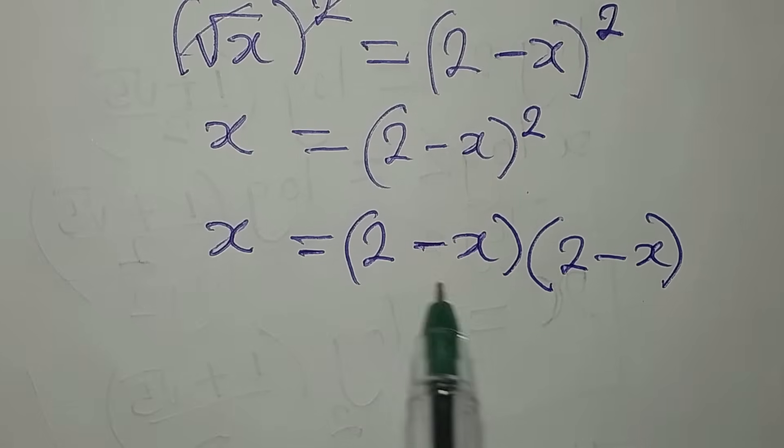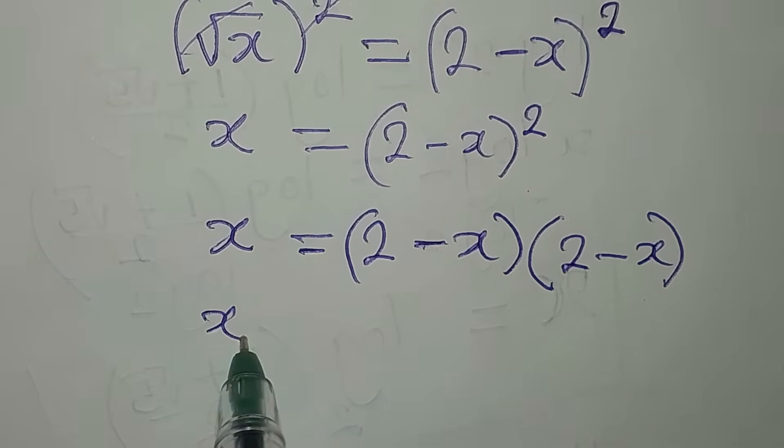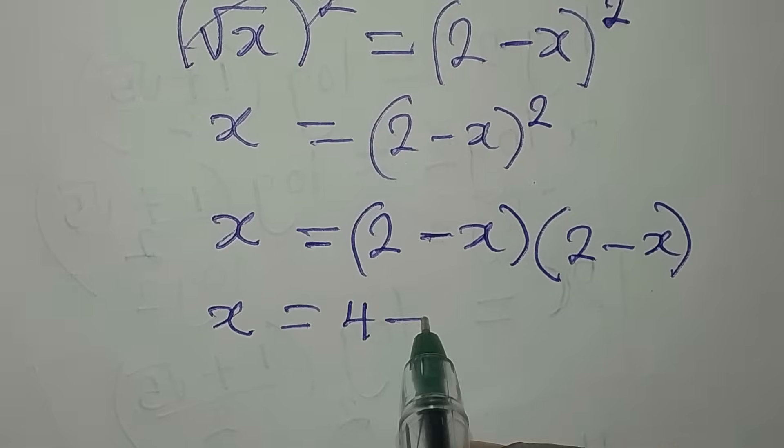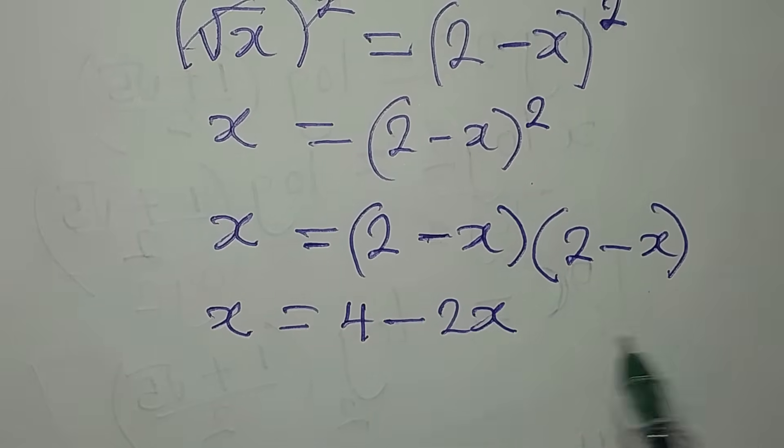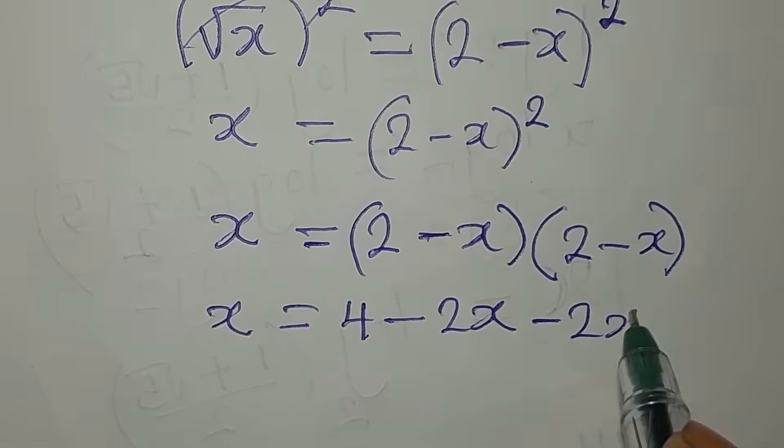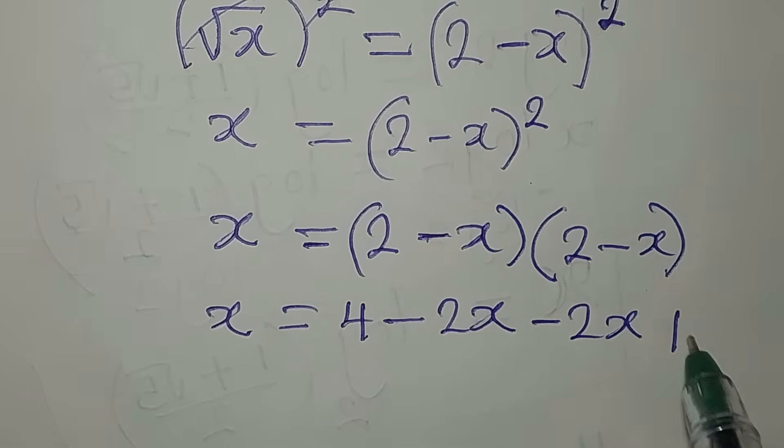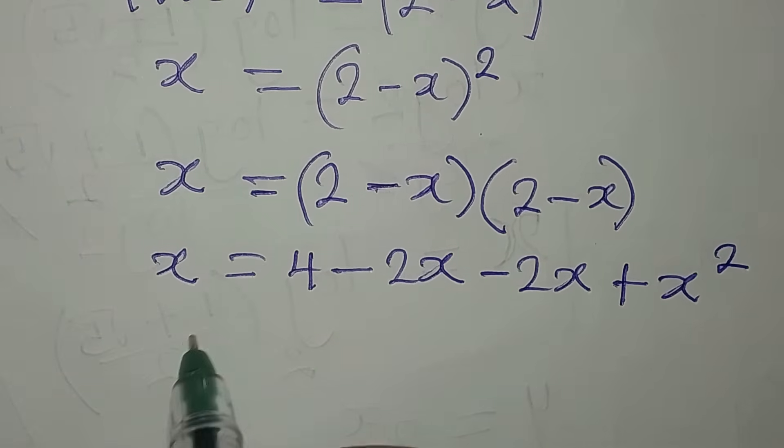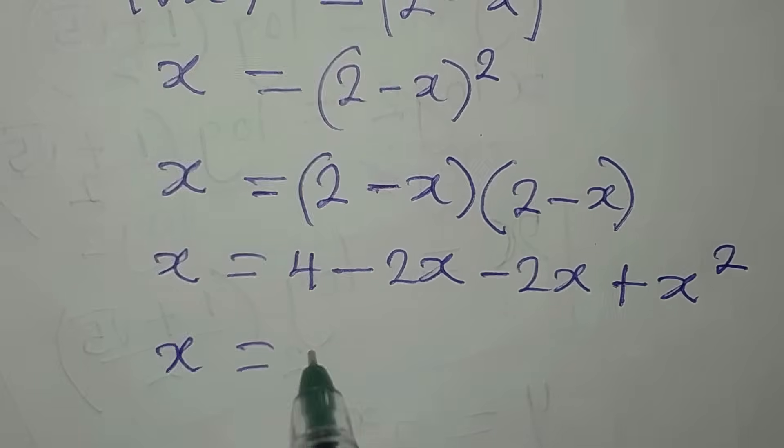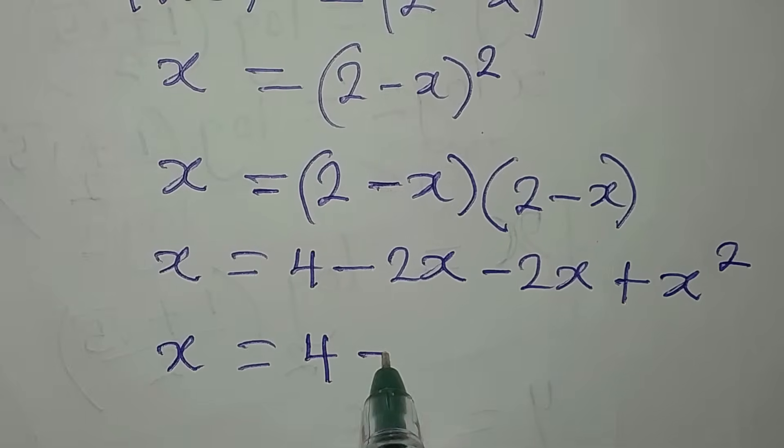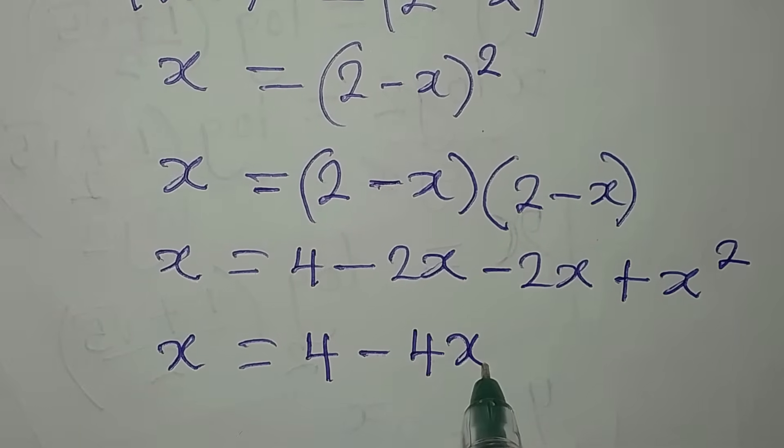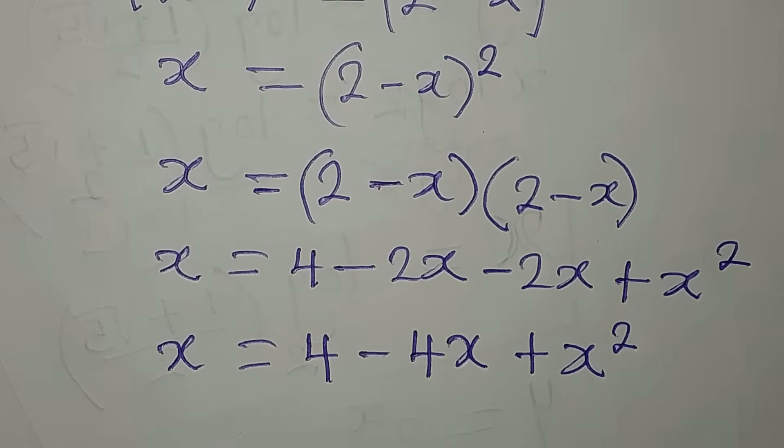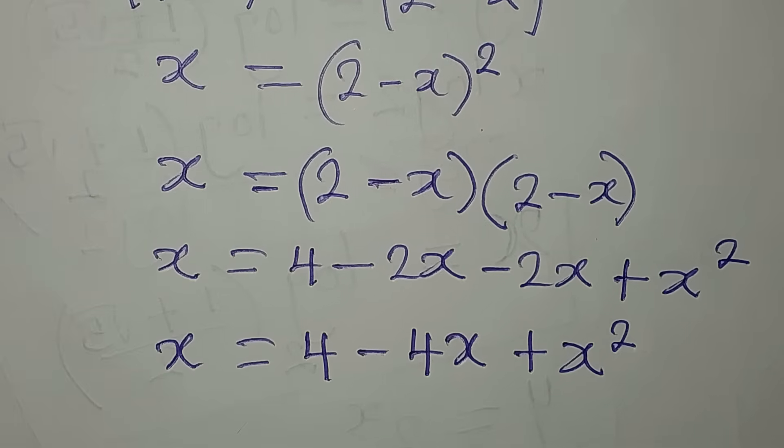Let's open the bracket. x will be equal to 2 times 2 is 4, then 2 times minus x is minus 2x, minus x times 2 is minus 2x, minus x times minus x is plus x squared. So if I continue with this here, I'll have x equals 4 minus 4x plus x squared.